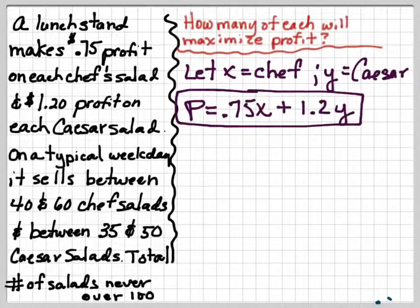Okay, my profit is going to be, I'm going to make 75 cents on each, I'm going to make a profit of 75 cents on each chef's salad and a profit of $1.20 on each Caesar salad. So that's what I'm going to try to maximize.